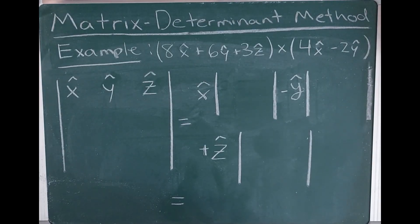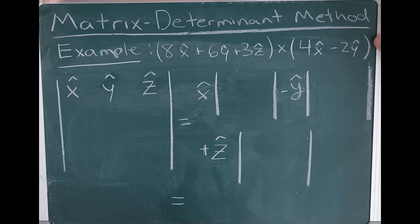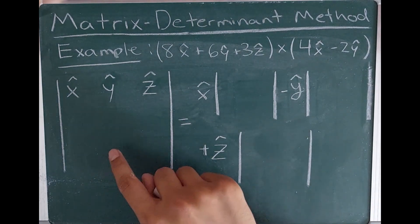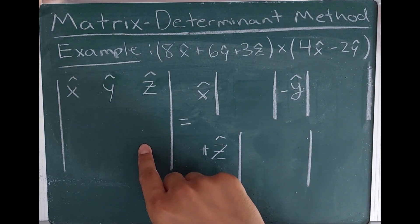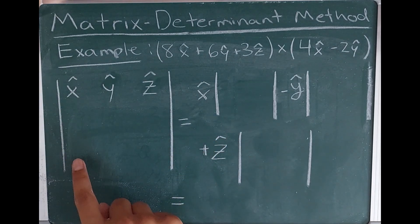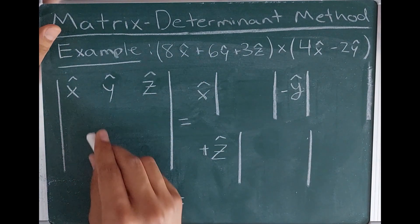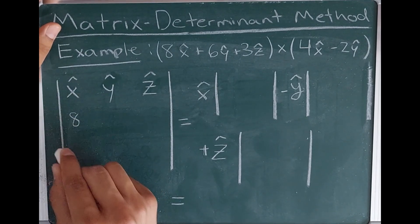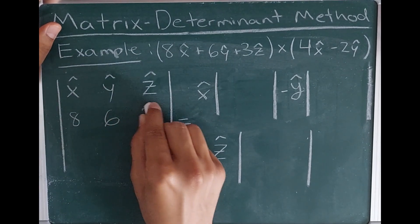That was a lot of information, so it's good to look at an example. We have two vectors: 8x-hat plus 6y-hat plus 3z-hat, and we're taking the cross product with a second vector, 4x-hat minus 2y-hat. Our first task using the matrix determinant method is to fill out a 3x3 matrix with these two vectors, where x-hat, y-hat, z-hat go in the first row. The first vector goes in the second row: 8 in the x-hat position, 6 in the y-hat position, and 3 in the z-hat position.